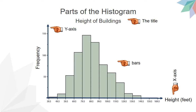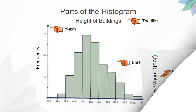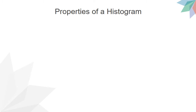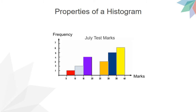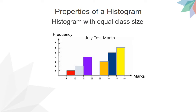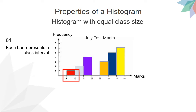Let us go into detail about the properties of the parts of the histogram. Here, we have a histogram where all the class intervals are of the same size, commonly known as a histogram with equal class size. The first property: each bar represents a class interval. For example, the red bar here represents the number of people whose marks are in the class interval of 5 to 10 marks.